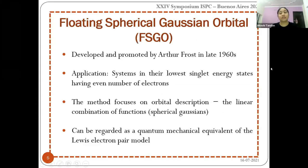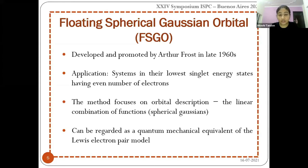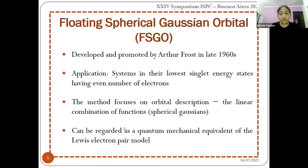The FSGO approach was first developed and promoted by Arthur Frost in the 1960s. It is made for systems in their lowest singlet energy states with an even number of electrons, though other systems are also applicable with somewhat decreased accuracy. As the name suggests, the method focuses on orbital description as a linear combination of spherical Gaussian functions, and can be described simply as a quantum mechanical equivalent of the Lewis electron pair model.